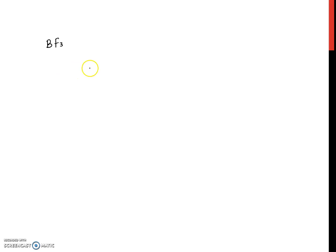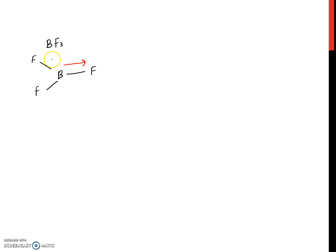Another example is BF₃, boron trifluoride. After drawing the Lewis structure and determining the molecular geometry, the shape is trigonal planar. Boron is less electronegative compared to fluorine, which has high electronegativity. So the electron share is attracted towards fluorine. Each bond here is called a polar bond because the electron is attracted towards fluorine.